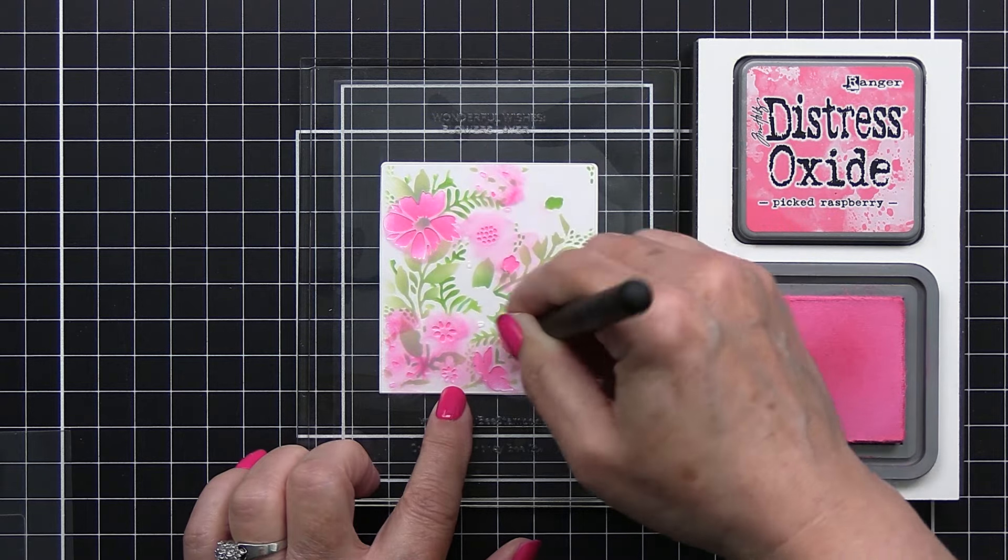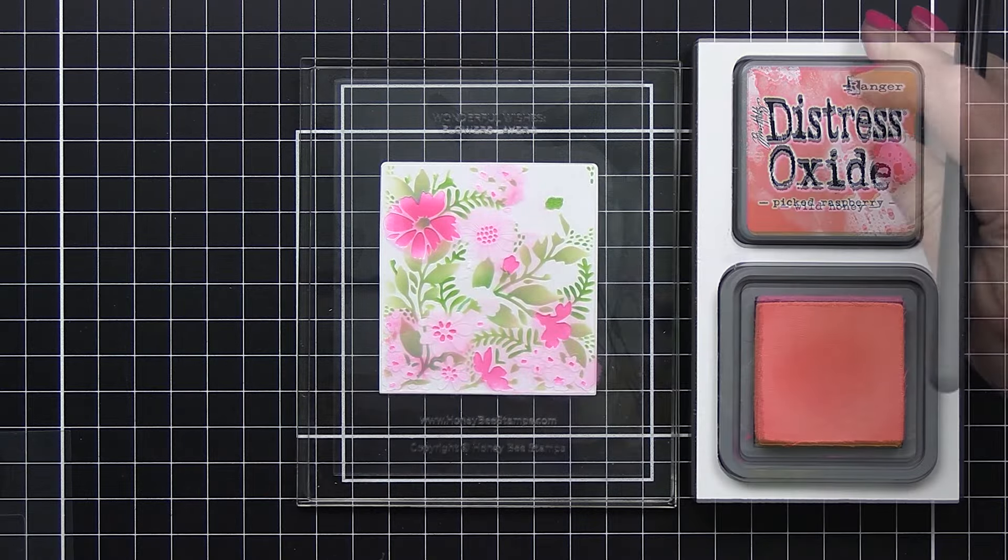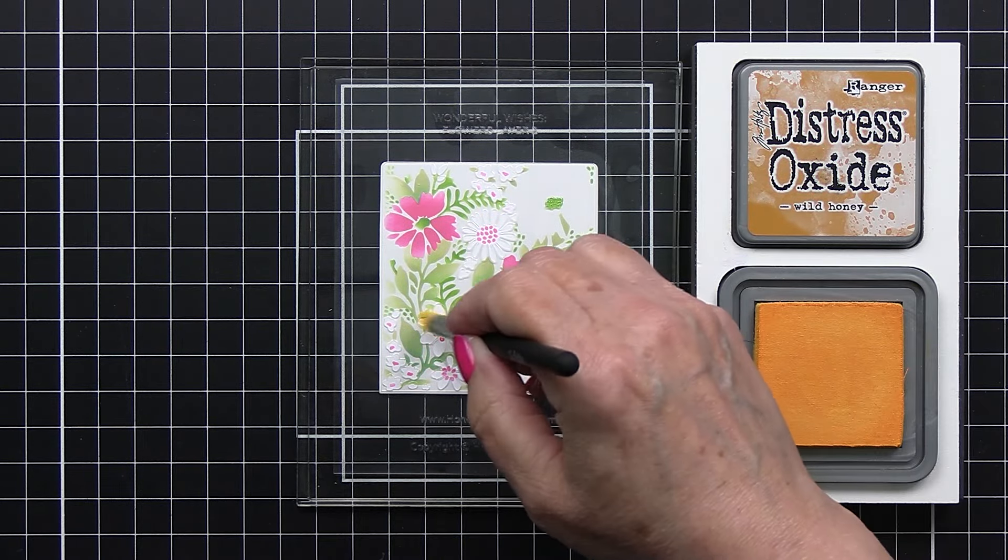I'm just blending into all of those different areas on this stencil, which is the first stencil for the florals, just pouncing and rubbing and brushing in with that fine detail brush from Honey Bee and getting that really pretty pink ink in there.